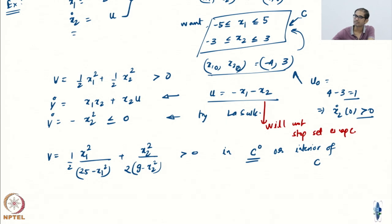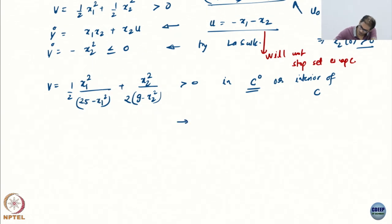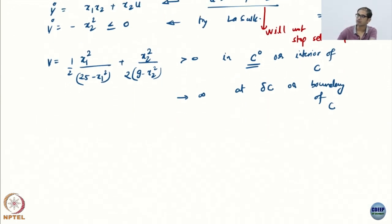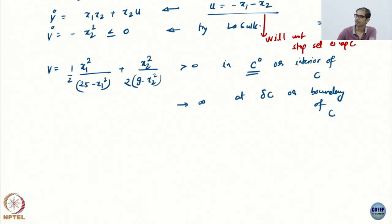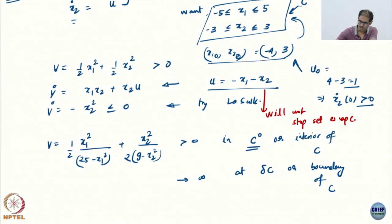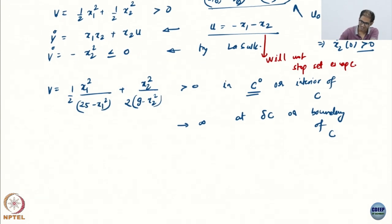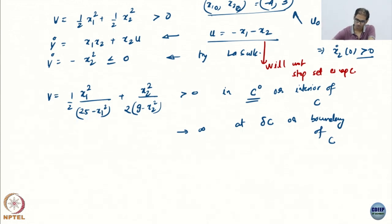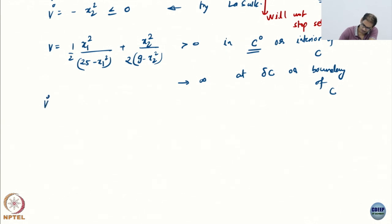Now I am going to do standard Lyapunov-like analysis with this function, because as long as I am in the interior, things are fine. Let me take V̇ — the painful process of taking derivatives. The first piece is 2x1·x1_dot divided by (25 - x1²), then I take the derivative of the denominator. Then the second term: 2x2·x2_dot divided by (9 - x2²), plus additional terms from the quotient rule.